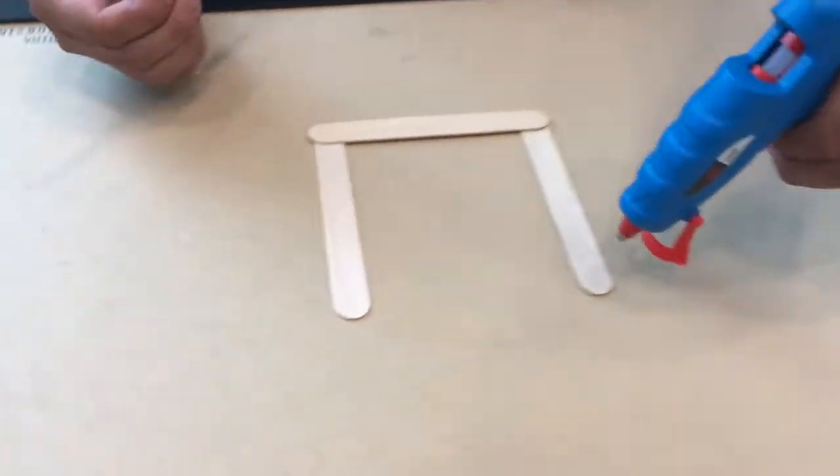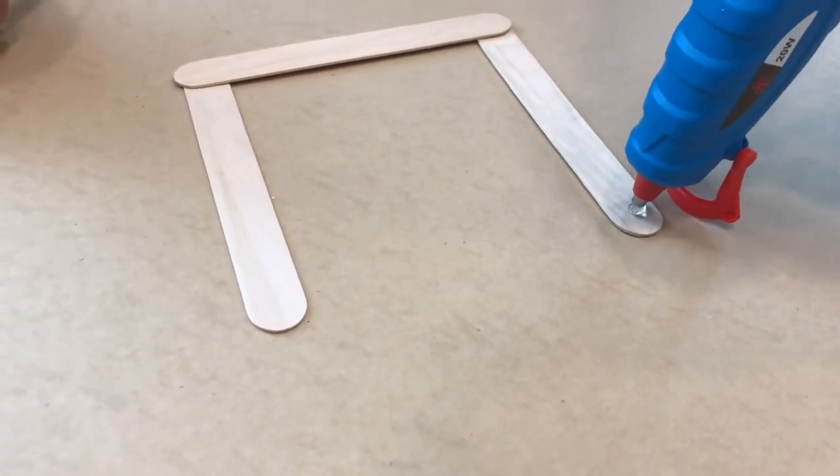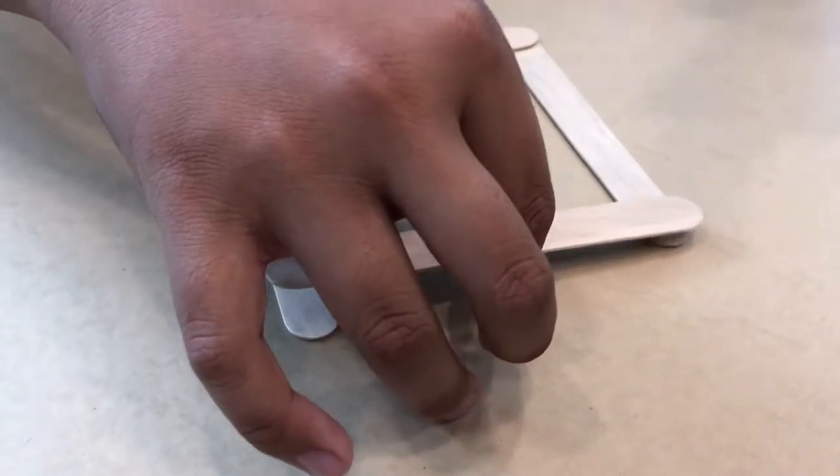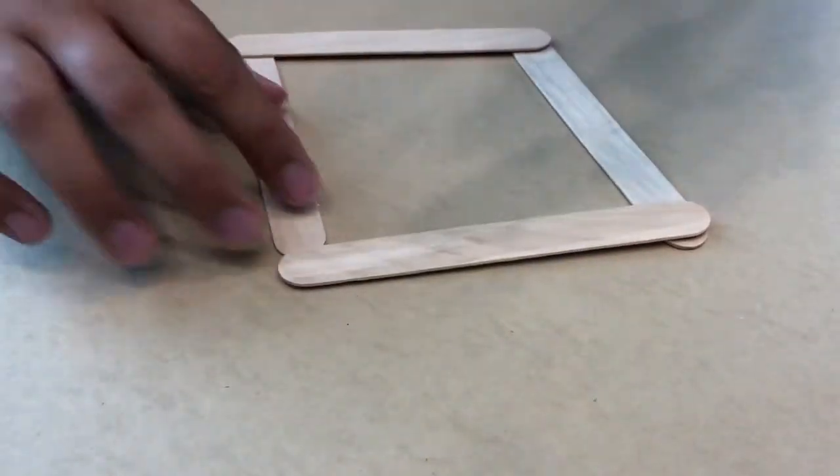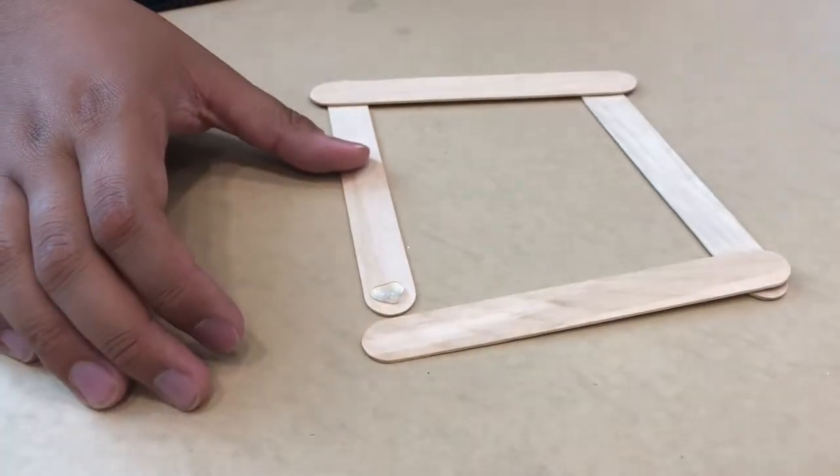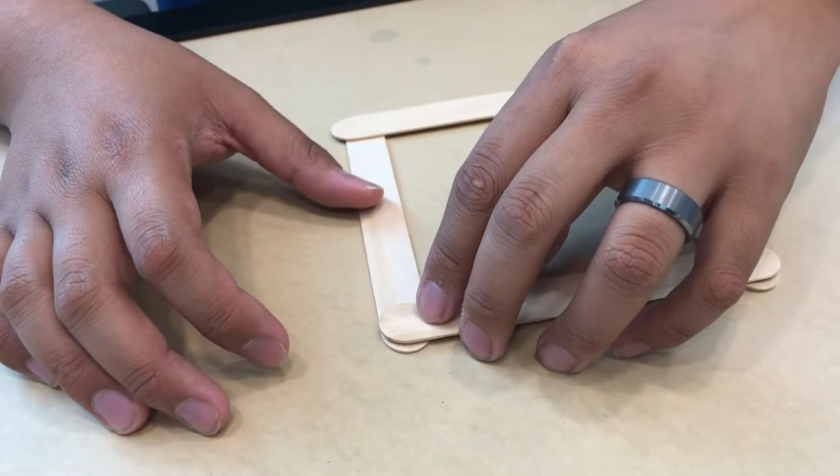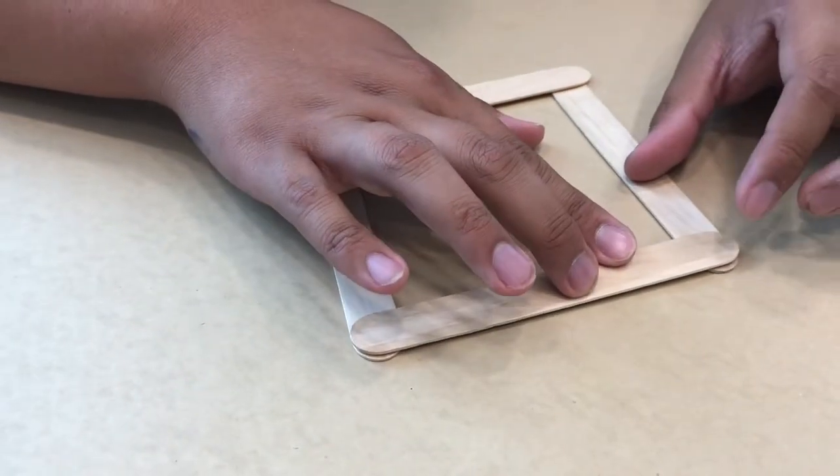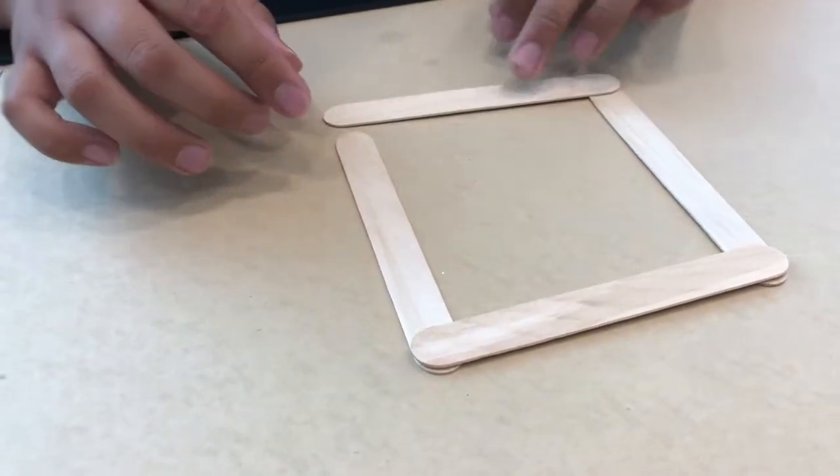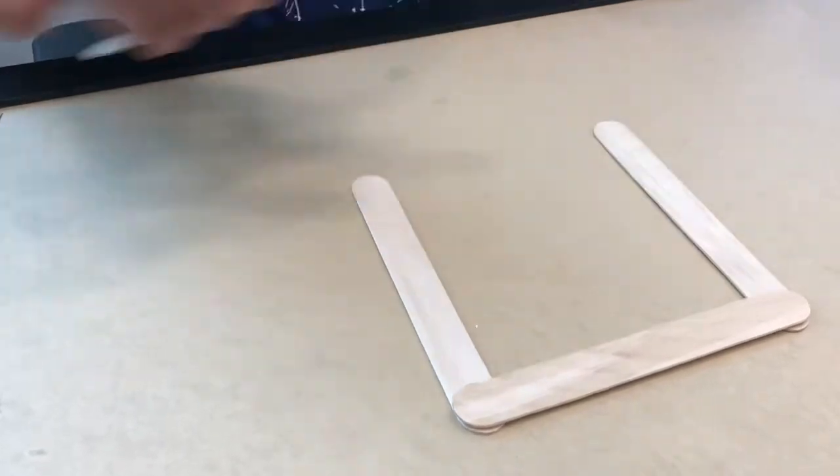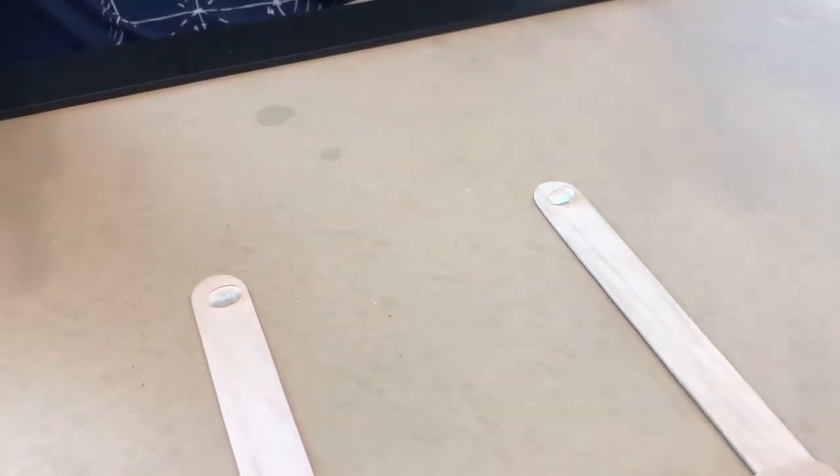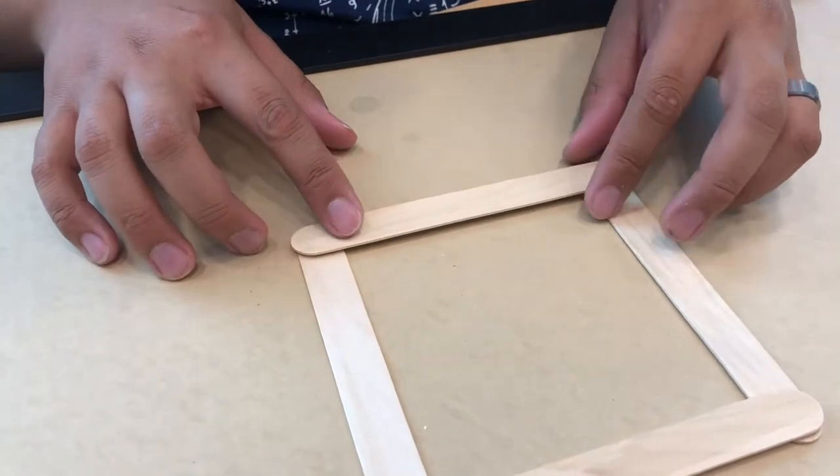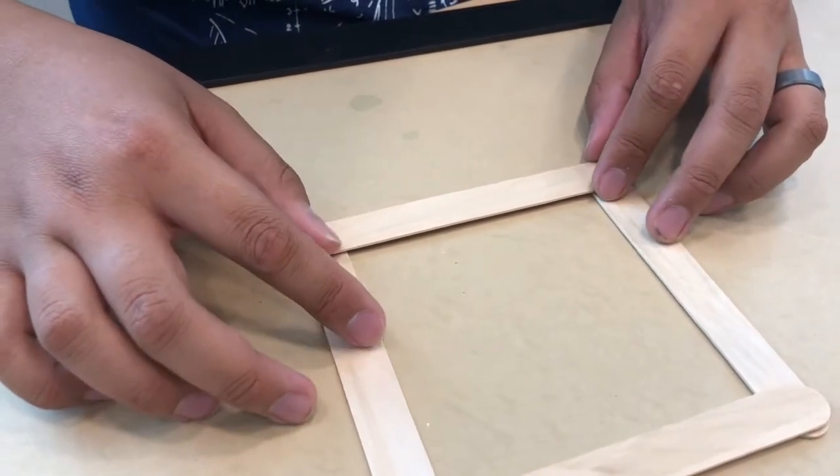Once your hot glue gun has heated up for a couple minutes, you're going to take a little bit of hot glue, put it on there, place your popsicle stick down. You want to do it to both sides and keep it to a square shape. Just one dab of glue will do. You don't need that much at all. But be careful not to let it touch you, because the hot glue gun and the hot glue is hot.